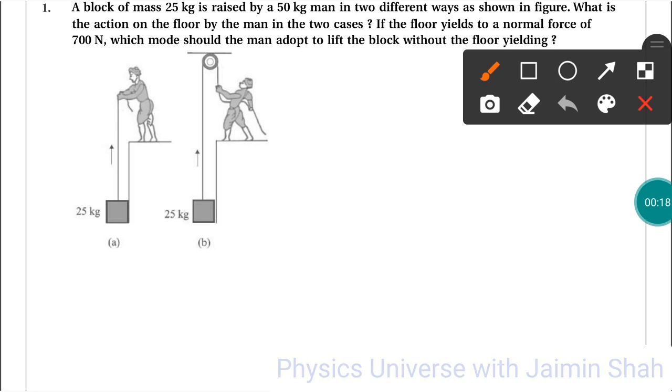For the first case, mass here is equal to 25 kg. Force exerted by the man, F, is equal to mass into acceleration. So mass is 25 into gravitational acceleration is 10.